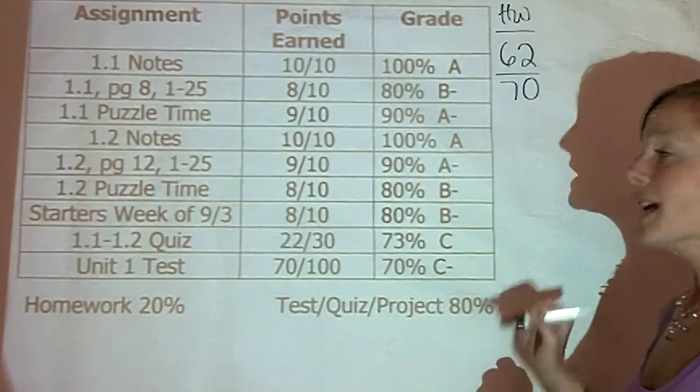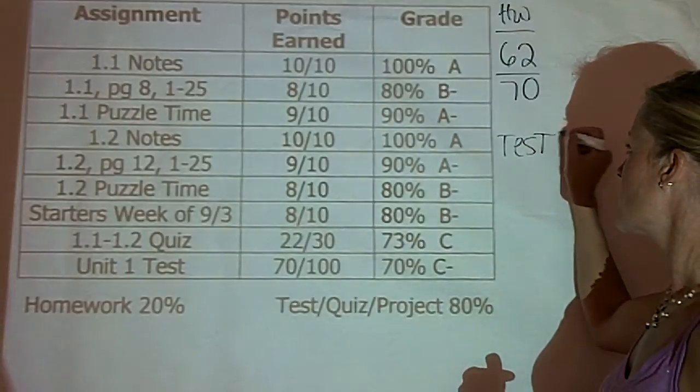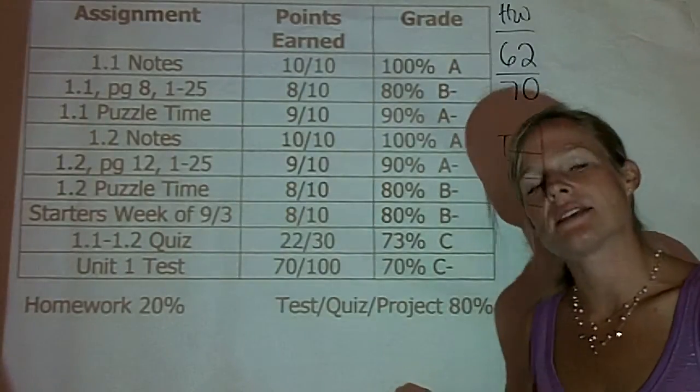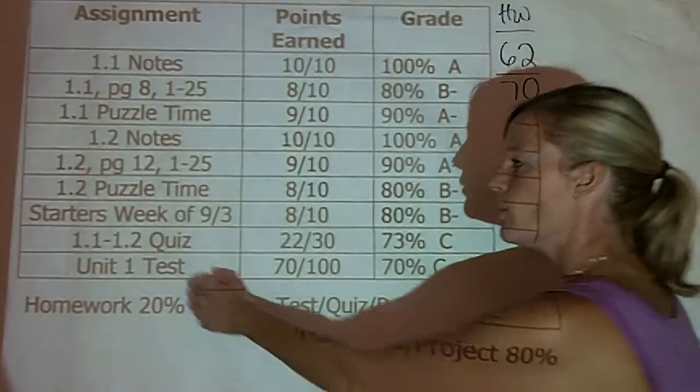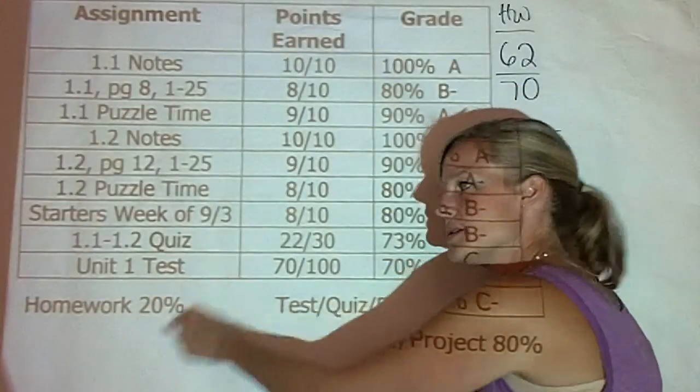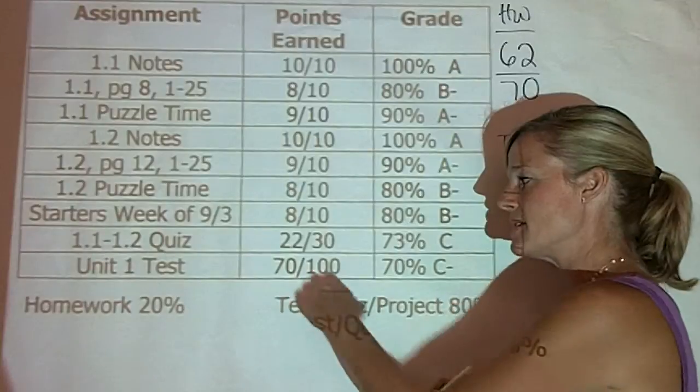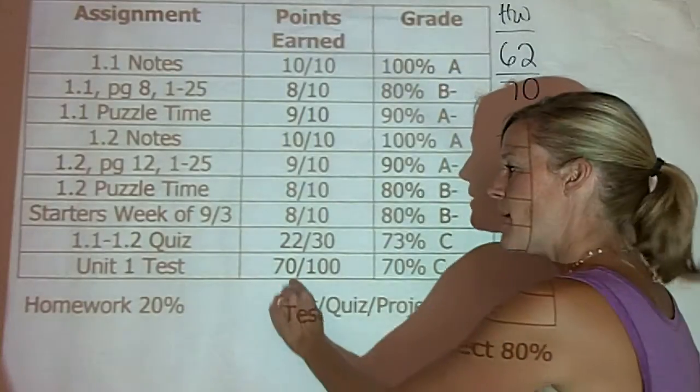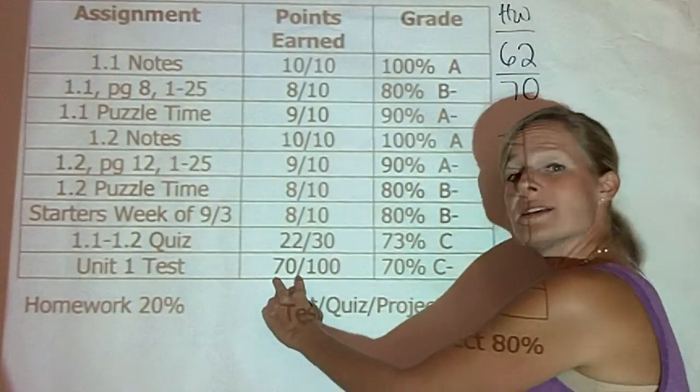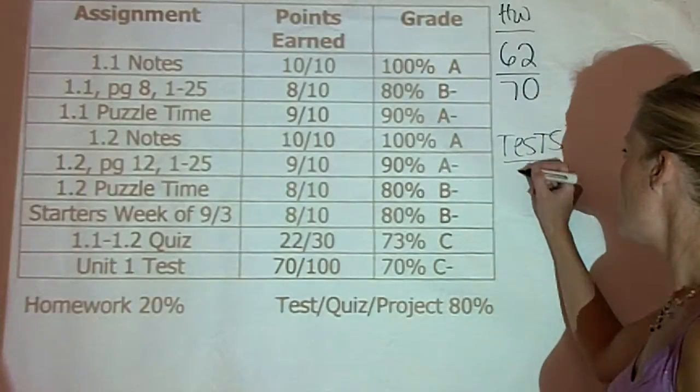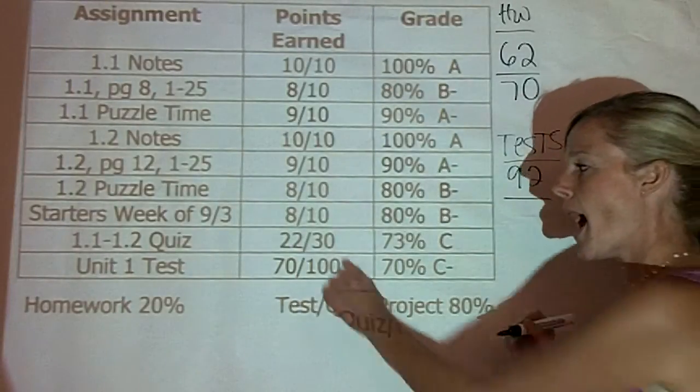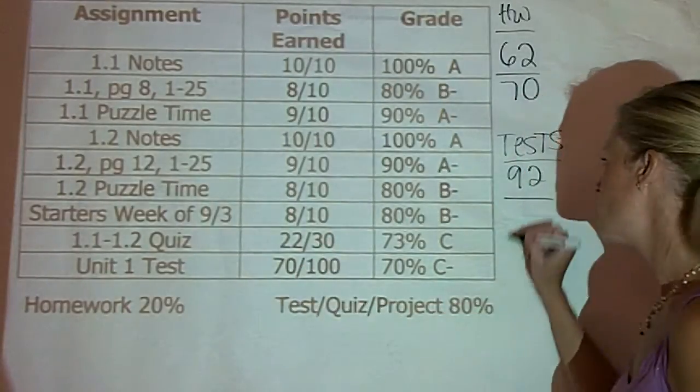As far as the assessments go, I'll just call them tests. Tests and quizzes both count as assessments. We have a 1.1, 1.2 quiz, and a unit 1 test here. On the quiz, they earned 22 out of 30. On the test, they earned 70 out of 100. That means they earned 22 plus 70, so they earned 92 points out of 30 plus 100, which is 130.